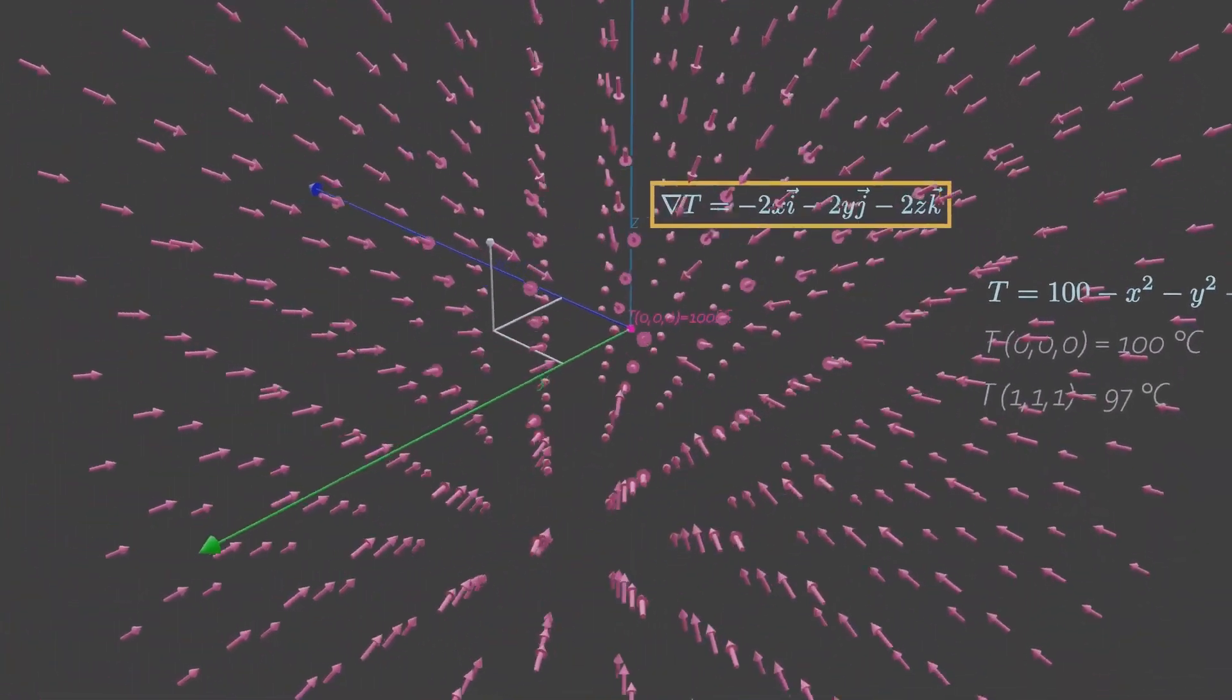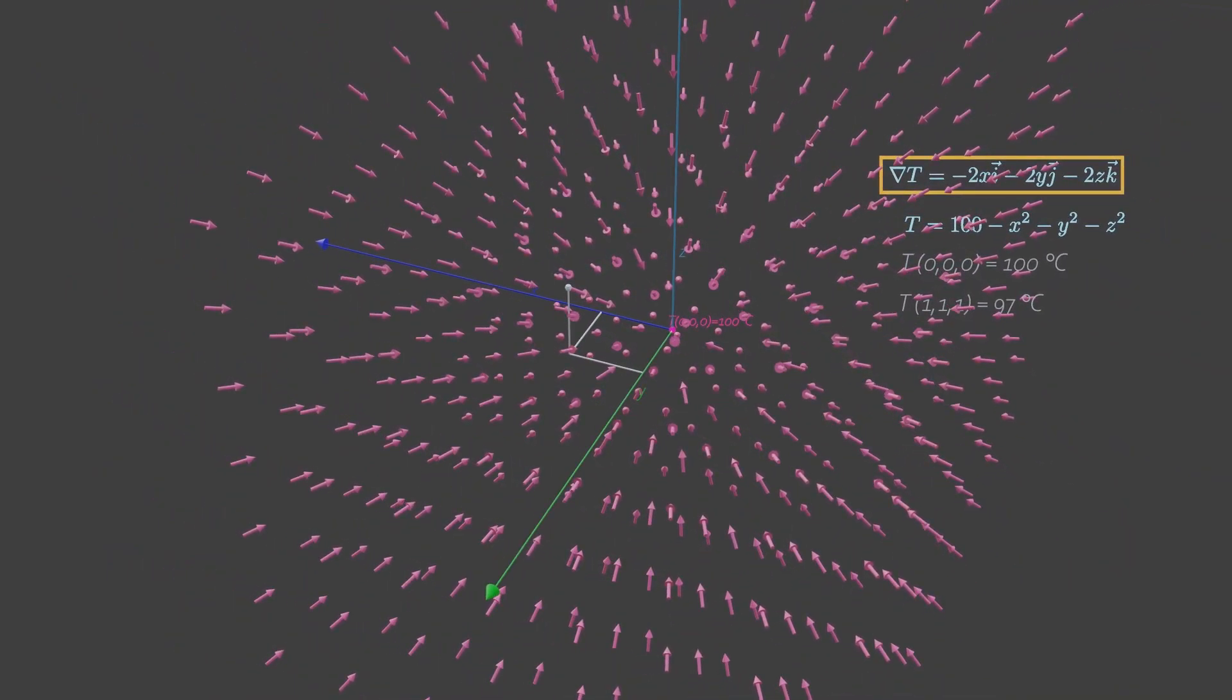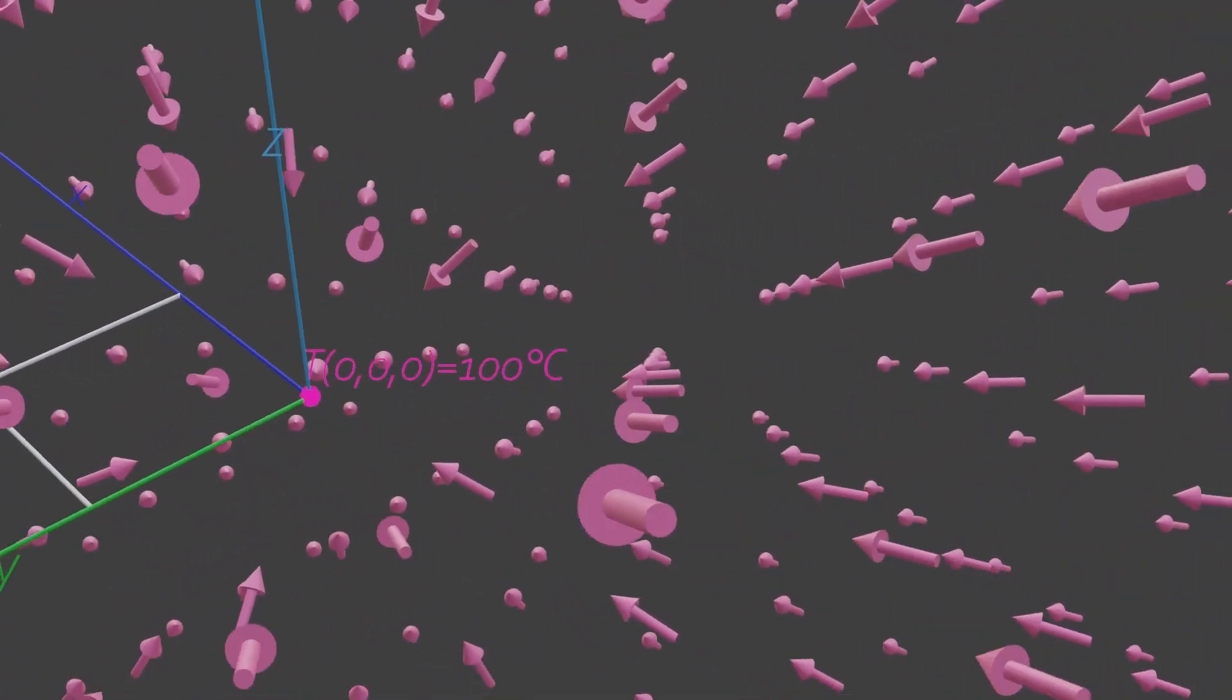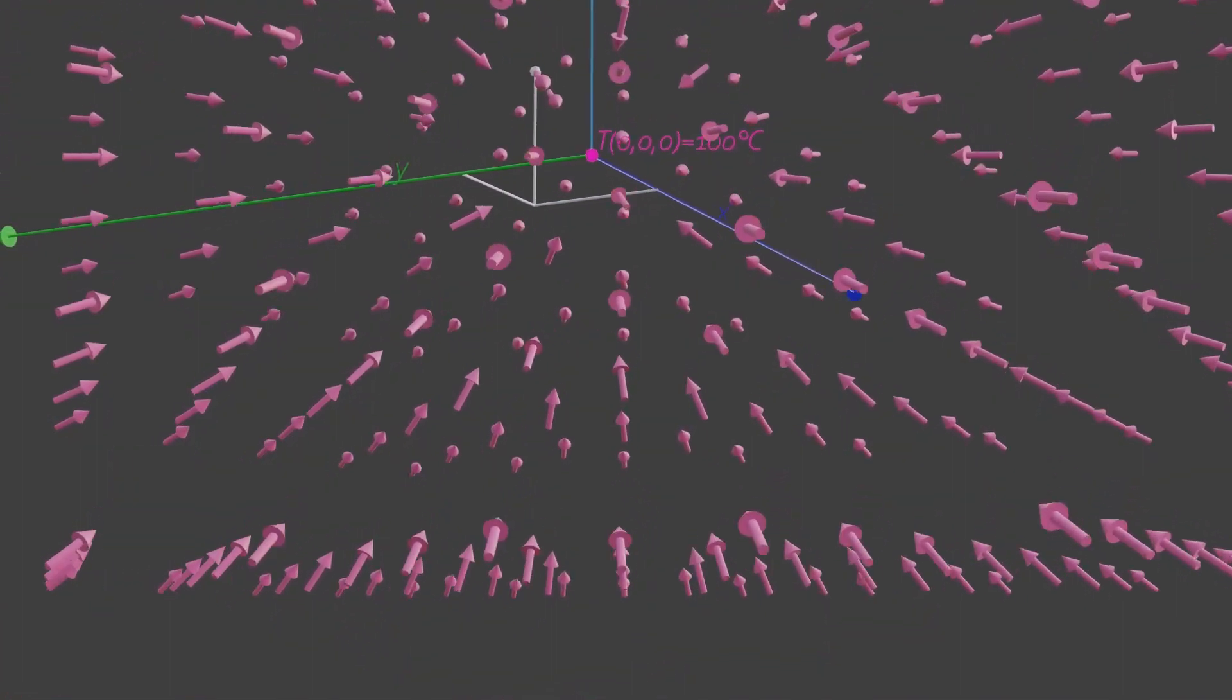So, at each point in the region, it gives the direction for which the increase in temperature is greatest. The resultant of gradient vectors point toward the origin.